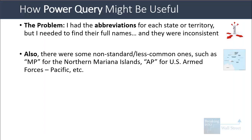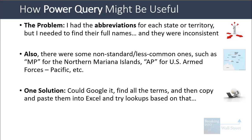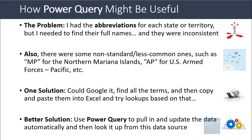Also, in this list there were some non-standard or less common abbreviations, such as MP for the Northern Mariana Islands or AP for US Armed Forces in the Pacific. One solution would be to Google it, copy and paste the terms into Excel, and do lookups. But a better solution — one that reduces time and effort — is to use Power Query to pull in and update the data automatically, then look it up directly from that data source.